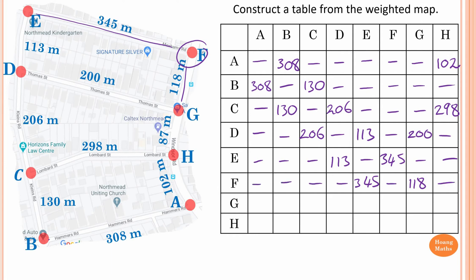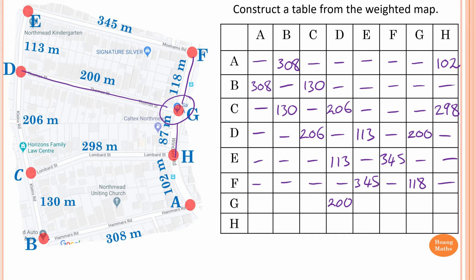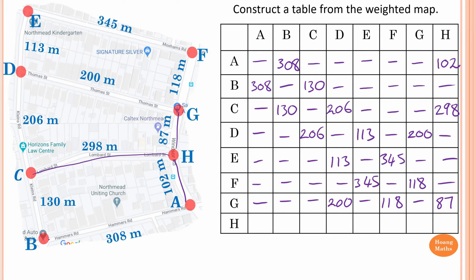For vertex G, the only direct connections are F, D, and H. G to D is 200, G to F is 118, G to H is 87. G to G is zero — leave it blank. For H, the direct connections are A, C, and G. H to A is 102, H to C is 298, H to G is 87. The rest have no direct connection with H — leave them blank.